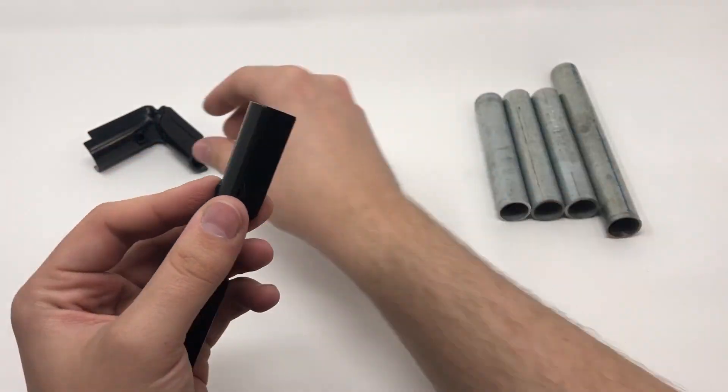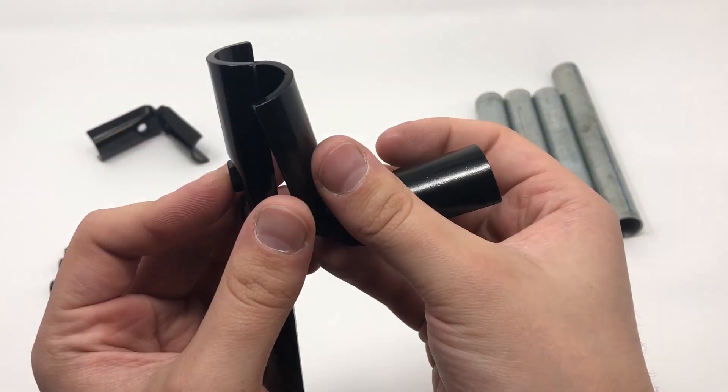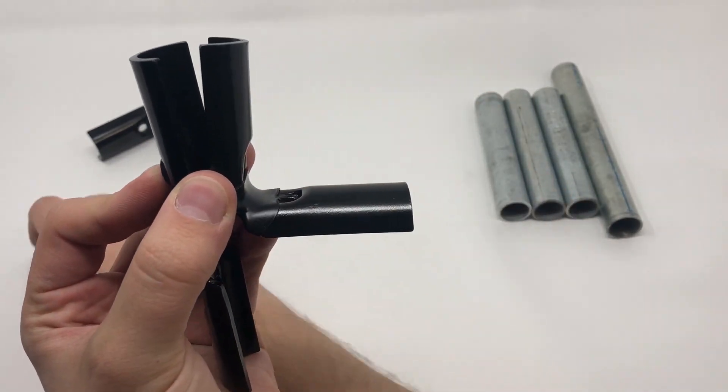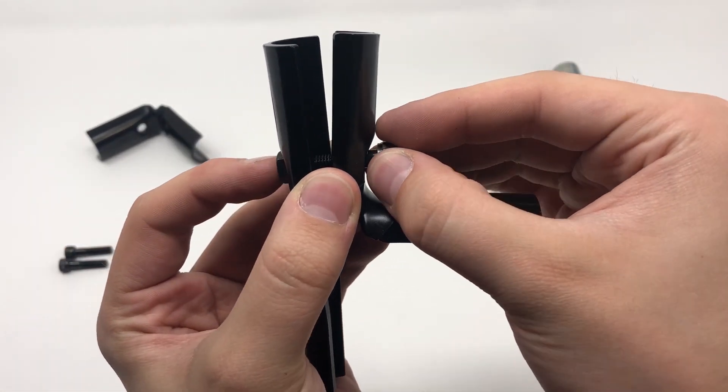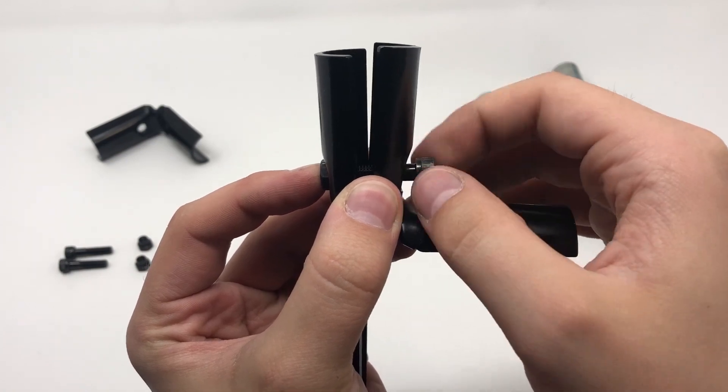The four-way connector joins three pipes at 90 degree angles and one vertical structural pipe through the center. Use it to connect and fortify structures together.